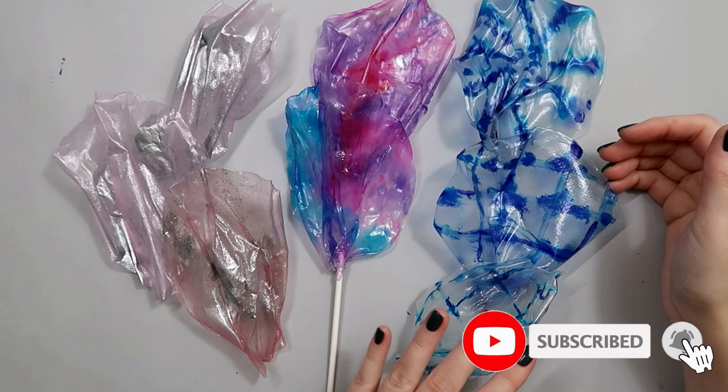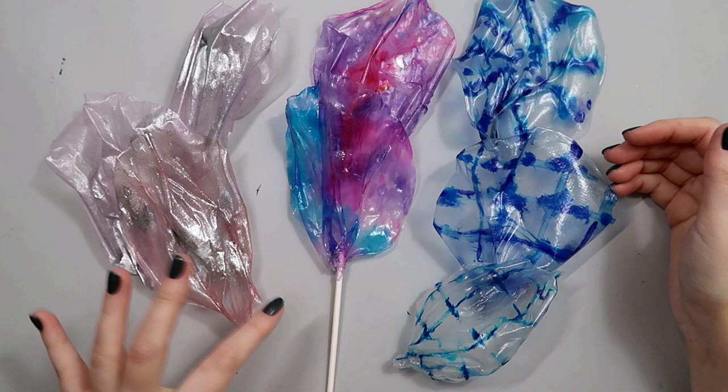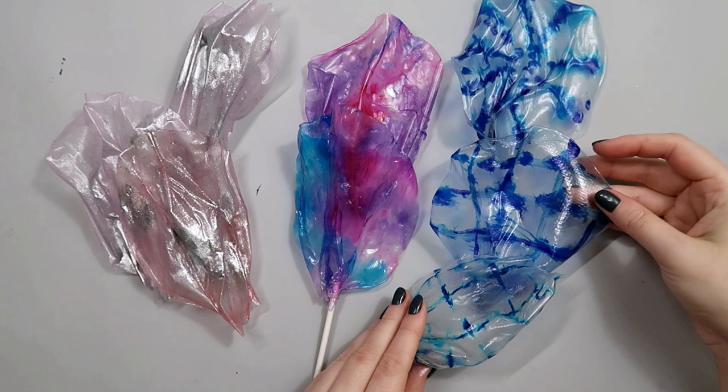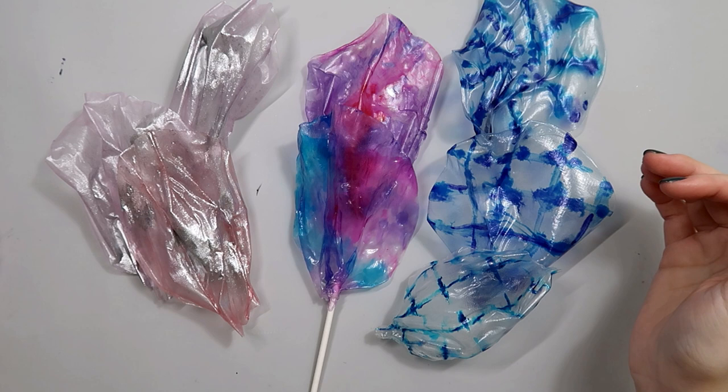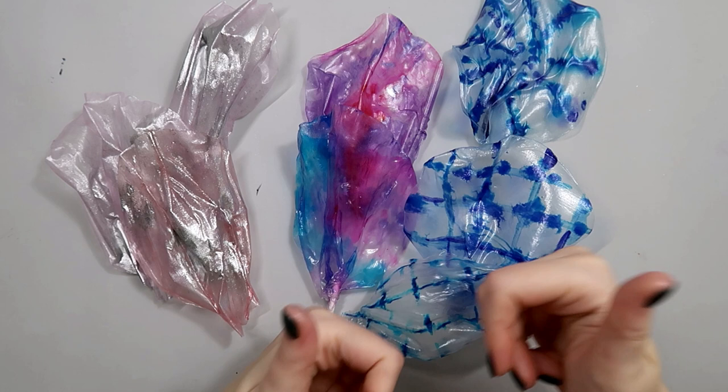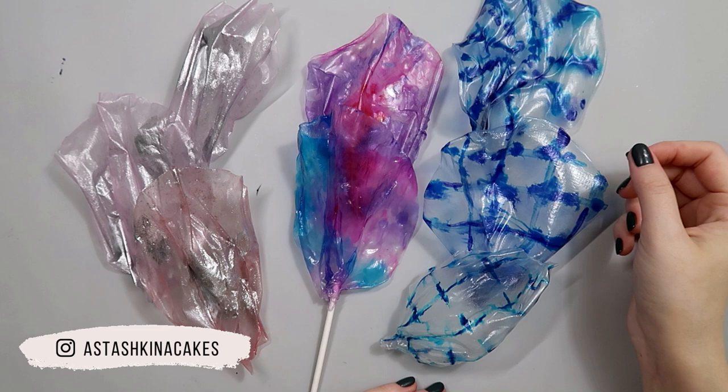Now you know how to create these three different styles of rice paper sails: this pink and metallic one, rainbow or unicorn style, and this tie-dye shibori style. Next week I'm going to show you how to add these decorations to your rice paper sails so you can make them even cooler and more interesting. Don't forget to subscribe to my channel, like this video, and share with your cake friends. My name is Anna Stashkina and I'll see you on this channel next week. Bye!